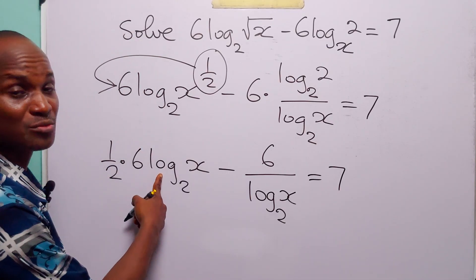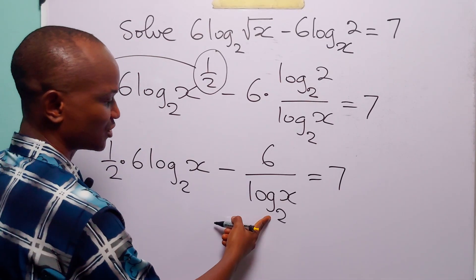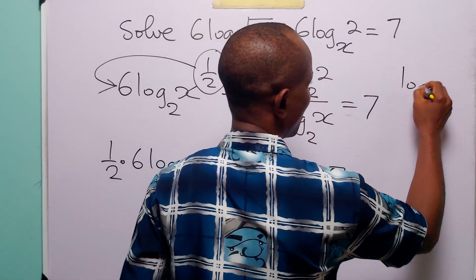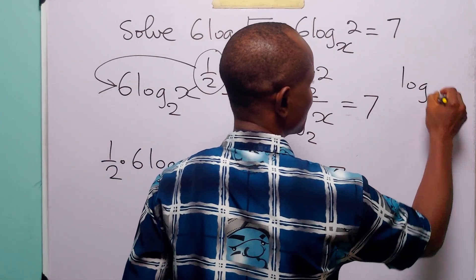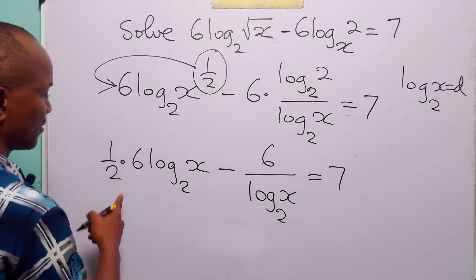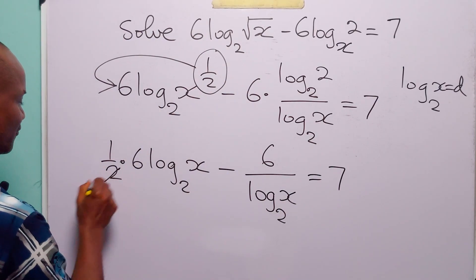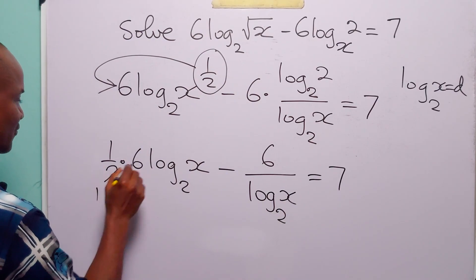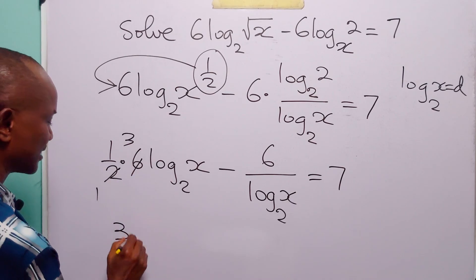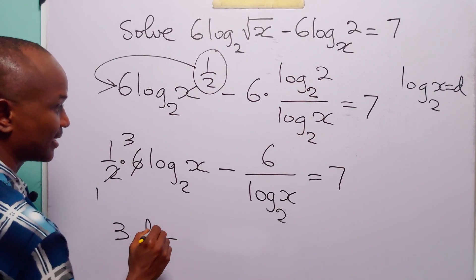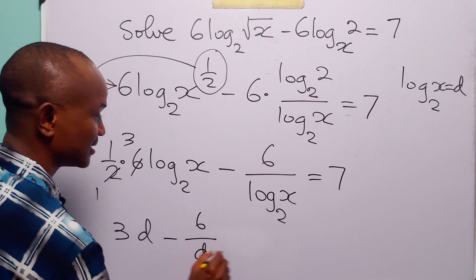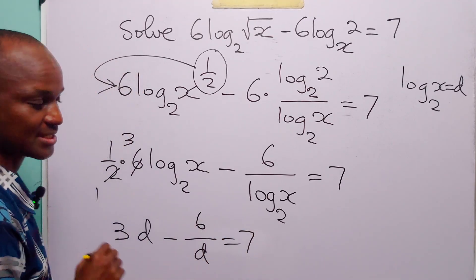Now since we have log to base 2 of x appearing in both terms, let us do a substitution. Let log to base 2 of x be equal to d. Now this equation becomes — multiplying half into 6 gives 3 — we have 3d minus 6 over d is equal to 7.